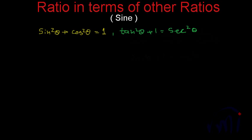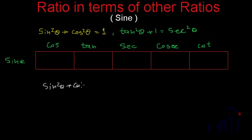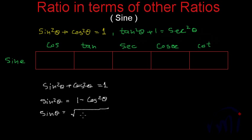We will convert sine in terms of all other ratios and write those relations in a table. Here we are converting sine in terms of cos, tan, sec, cosec, and cot. From sin²θ + cos²θ = 1, we get sin²θ = 1 - cos²θ, so sinθ = √(1 - cos²θ). This is the representation of sine in terms of cos.